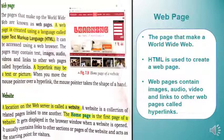A hyperlink may be a text or picture. When you move the mouse pointer over a hyperlink, the mouse pointer takes the shape of a hand. Basically, hyperlinks are links — when you click on them, you connect with another website.